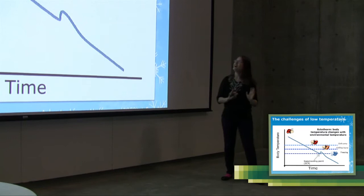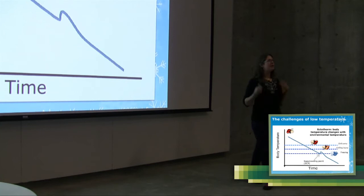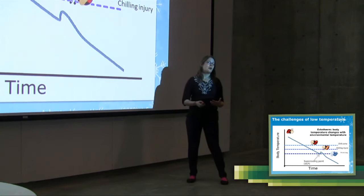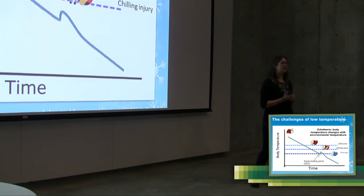Now, this is reversible. As soon as they warm up, they regain the use of their limbs. If they spend too much time at low temperature, though, they're going to experience something called chilling injury. So this is irreversible damage to the animal. It can lead to mortality depending on how cold-tolerant the animal is.